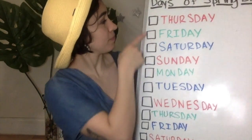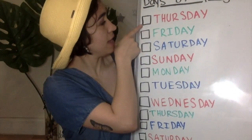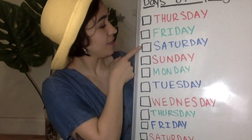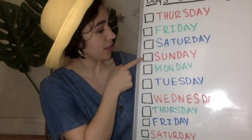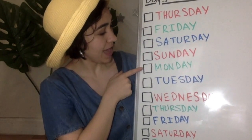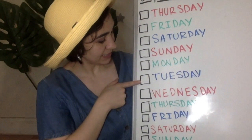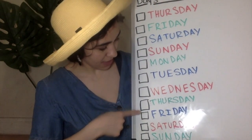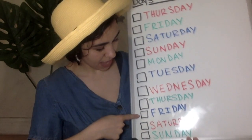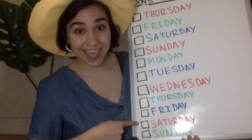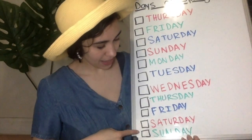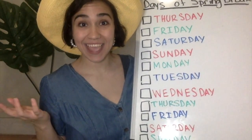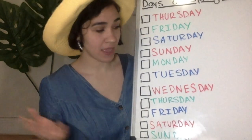Let's count them: 1, 2, 3, 4, 5, 6, 7, 8, 9, 10, 11. There's only 11 days in spring break.